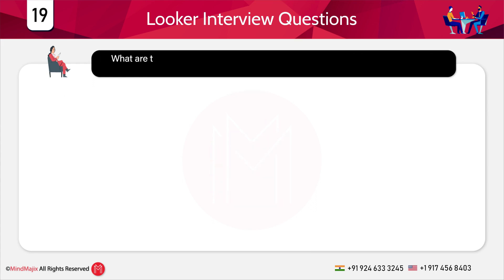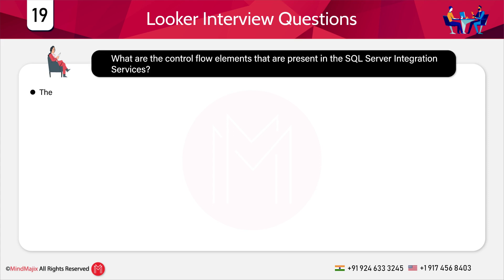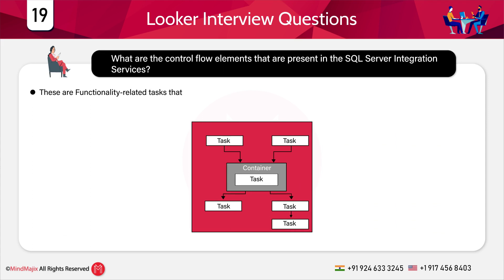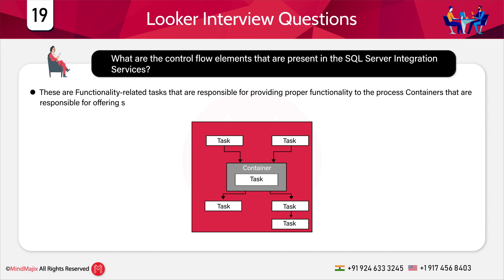The next question is: what are the control flow elements present in SSIS? These are functionality-related tasks responsible for providing proper functionality to the process, and containers that offer structures in different packages. Constraints are considered for connecting containers and executables in a defined sequence. All of these elements are not always necessary to be deployed in the same tasks and can be customized to a good extent.